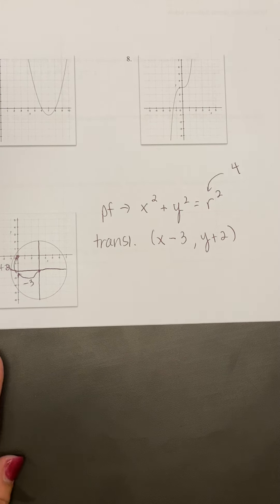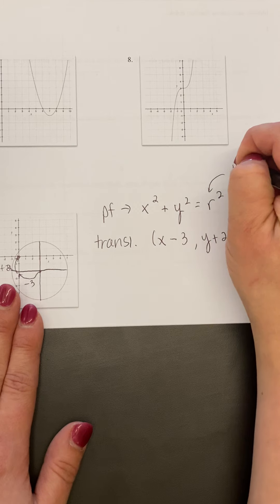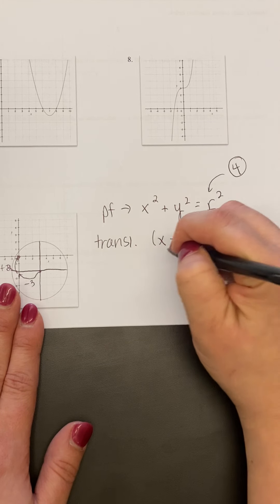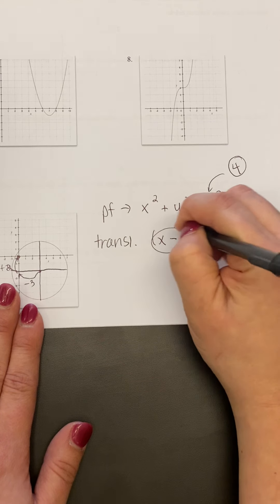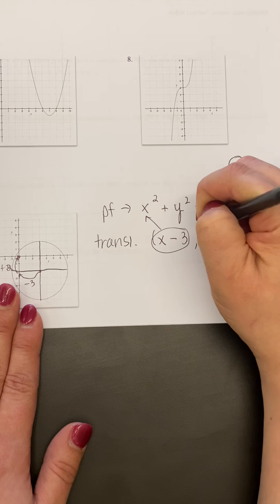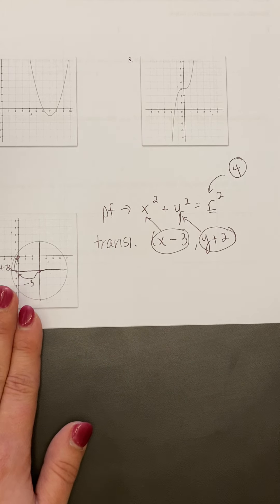From there, I need to take each of these quantities. I'll plug 4 in for r, x minus 3 plug it into x, and y plus 2 and plug it in for y.